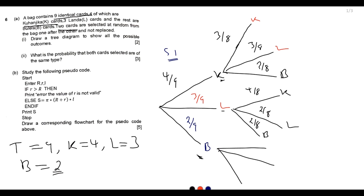On the branch where B was selected first: we could have the first selection B and second selection K. Since B was selected first, B reduced by one but K did not change, so it is four out of eight for K. For L, we have three out of eight because in the first place we selected B. Then we have one out of eight for B. This completes the second selection.